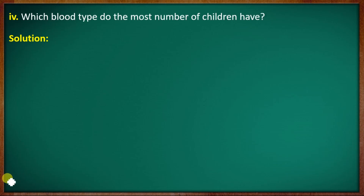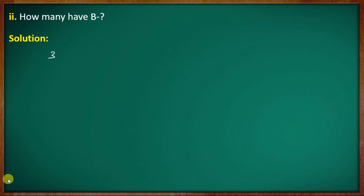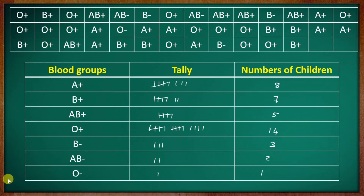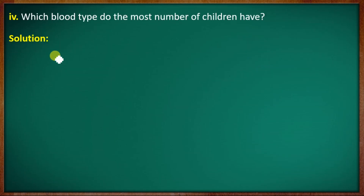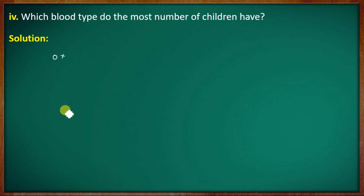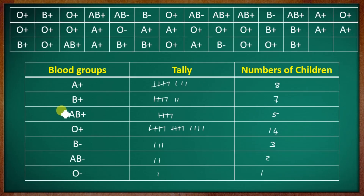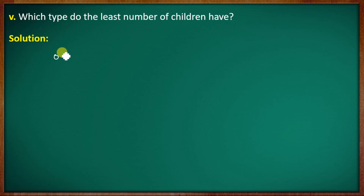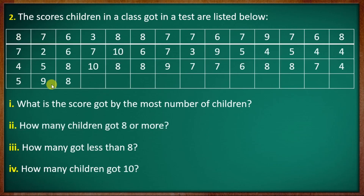Question 4: which blood group do the most number of children have? The answer is O positive, with 14 children. Question 5: which type do the least number of children have? O negative has the least, with only 1 child.